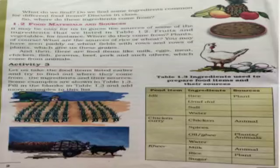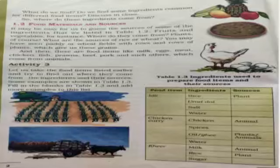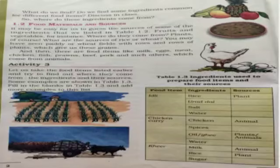Some food items like milk, egg, meat, chicken, fish, prawns, and beef come from animals. So vegetables, fruits, pulses, grains, and spices we get from plants, while food items like milk, egg, meat, and chicken we get from animals.